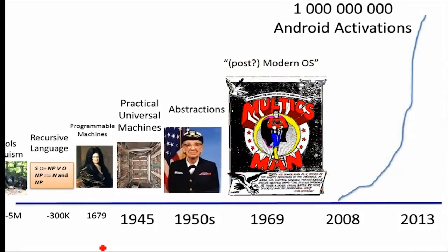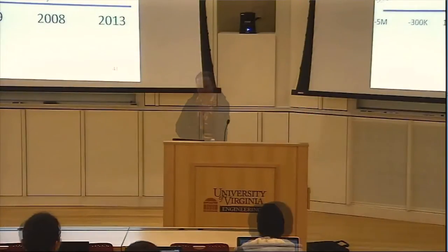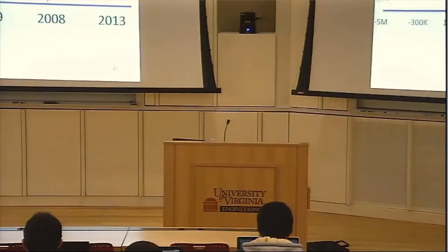So it seems like we're done with our story in 1969. We've got Multics — it's got all the important things that we have in our operating systems today, as well as some things we don't quite yet have. So why are we not done with our story? Because Unix happened. So why did Unix happen? Why were people not happy with Multics?